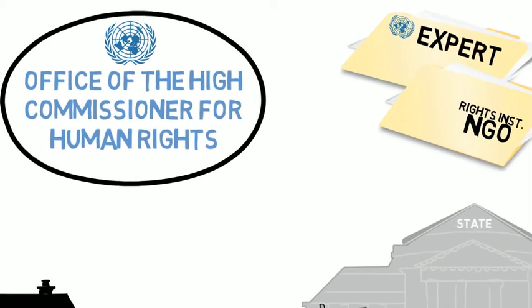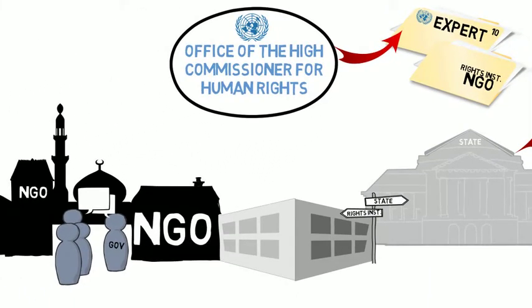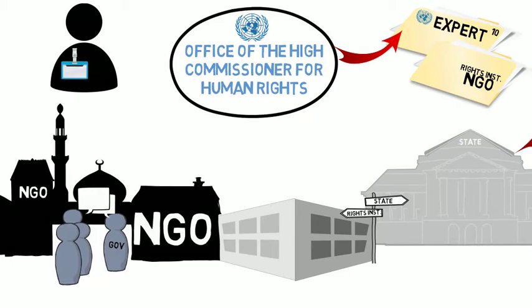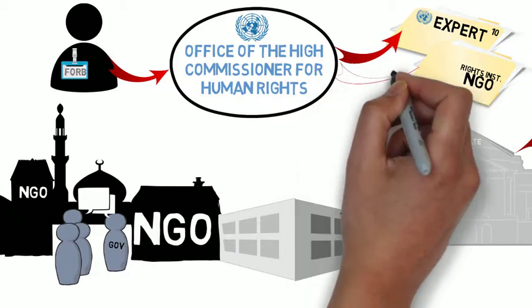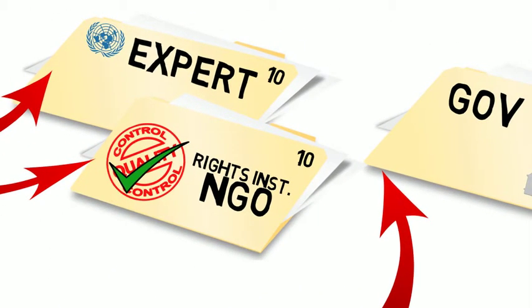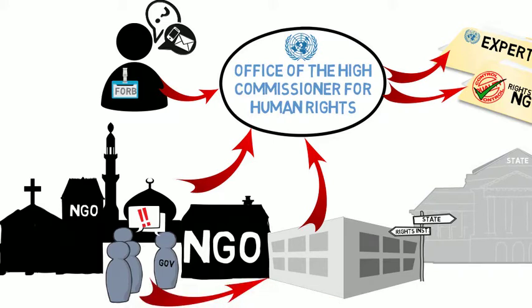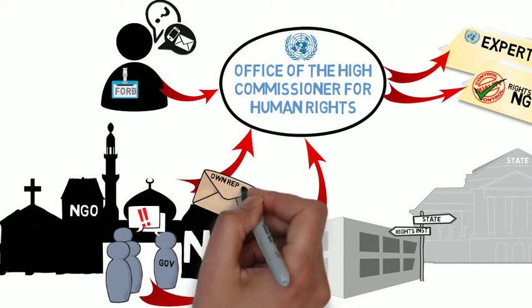The report summarising input from independent UN experts is 10 pages long and is prepared by the Office of the High Commissioner for Human Rights. The UN Special Rapporteur on Freedom of Religion or Belief is one of the experts whose input is included. The Office of the High Commissioner also submits a 10-page report summarising credible information about the human rights situation in the country from national human rights institutions and civil society organisations. It should be possible for civil society organisations to feed into all three reports by being part of government consultations, by engaging in dialogue with the Special Rapporteur, and by feeding into reports from national human rights institutions and other NGOs, or by preparing their own reports to send to the Office of the High Commissioner.